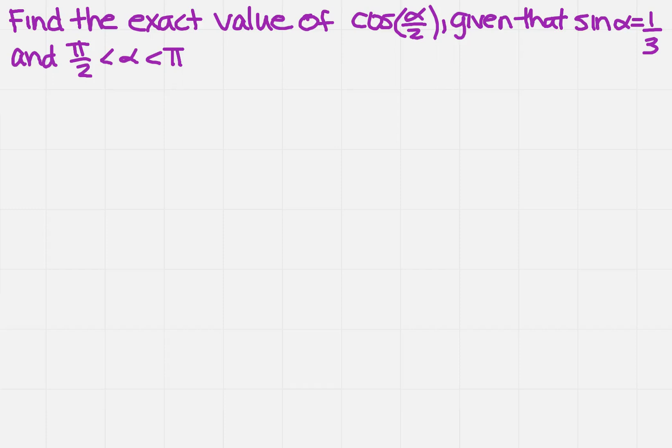Find the exact value of cosine alpha divided by 2 given that sine alpha equals 1 third and pi over 2 is less than alpha is less than pi.